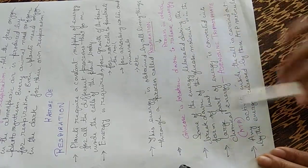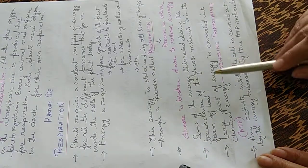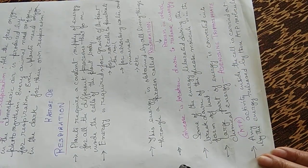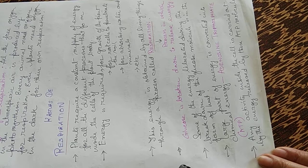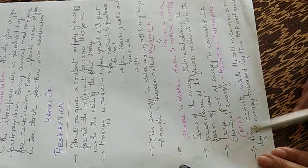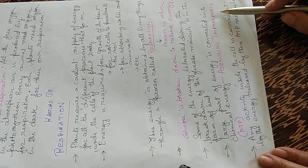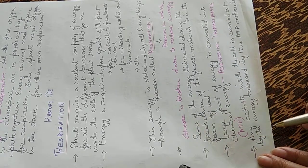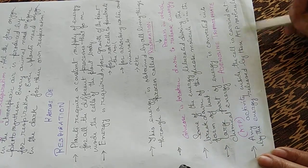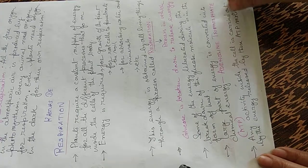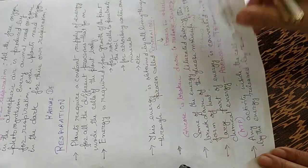Some of the energy liberated during the breakdown of glucose molecule is in the form of heat. Large parts of energy is converted into chemical energy, that is adenosine triphosphate ATP. Any activity inside the cell is carried out by the energy released by this ATP molecule.